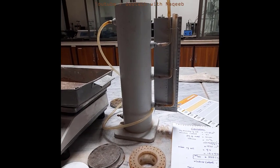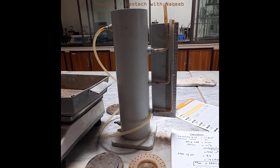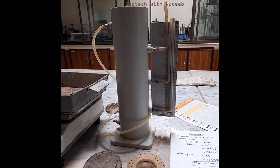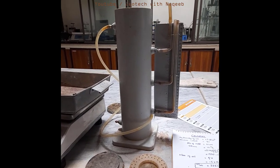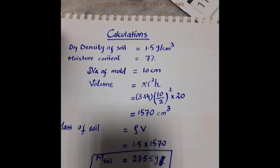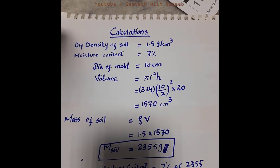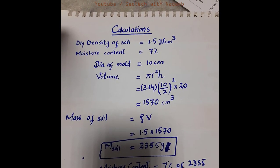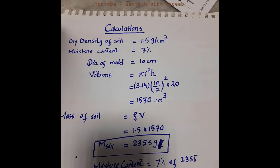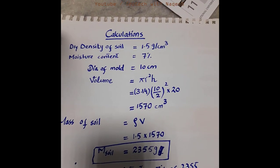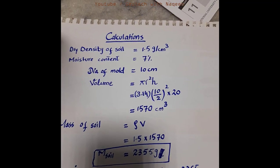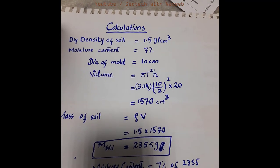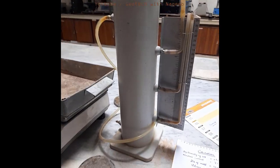Before discussing the apparatus, we first need to perform some calculations to prepare the remolded soil sample — specifically, how we remold the soil sample. Here you can see we have the dry density that is 1.5 g/cm³, and the moisture content that is 7%, which is an assumed value.